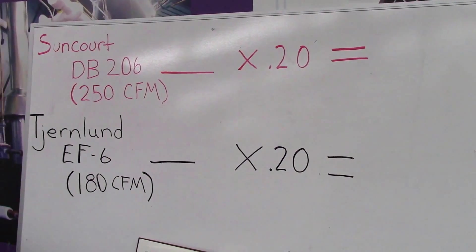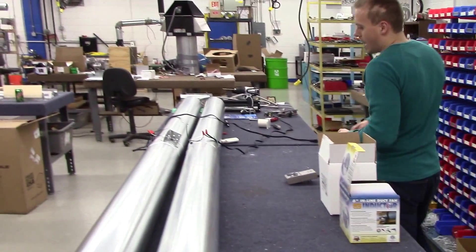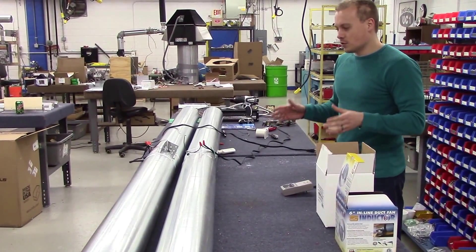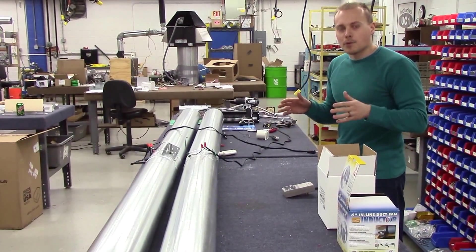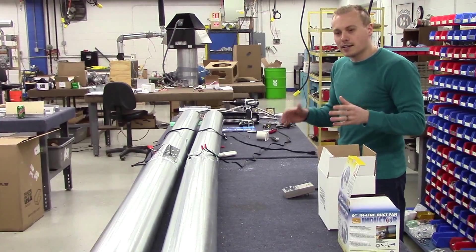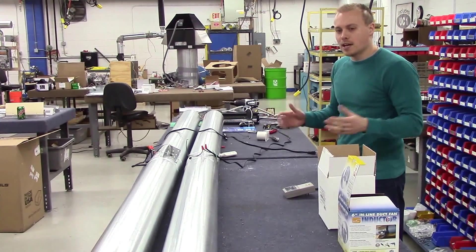So we're going to take a somewhat realistic application. We've added 10 feet of pipe here, and we're going to compare the performance of these two fans, do a quick volumeter test for air speed, and then calculate based on this pipe for CFM and see what they really stack up.